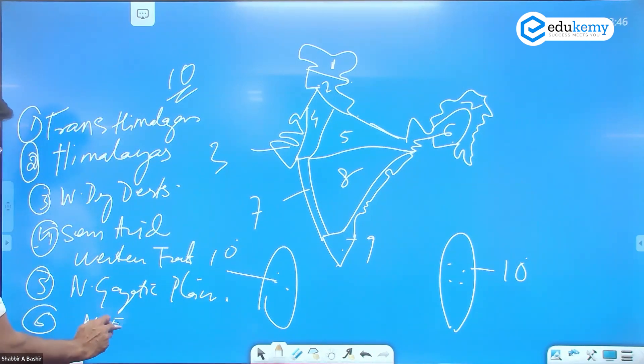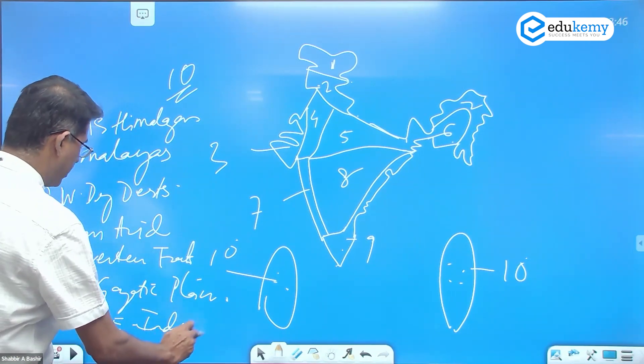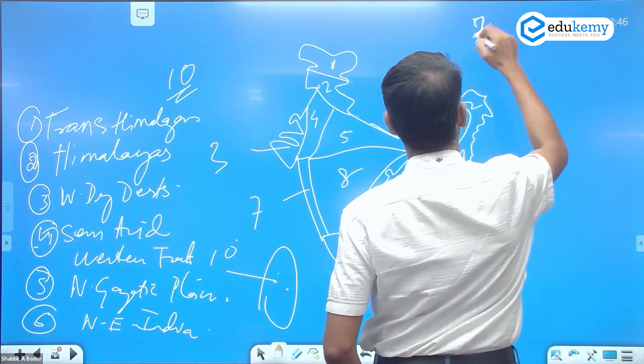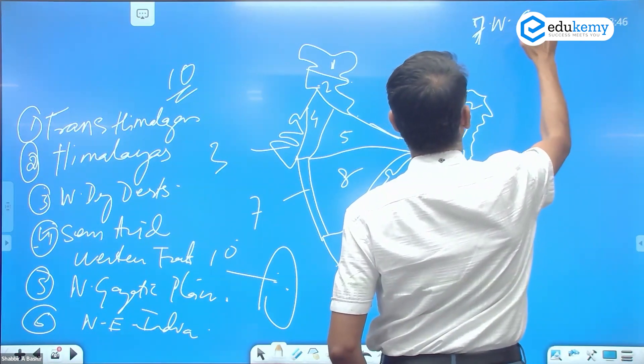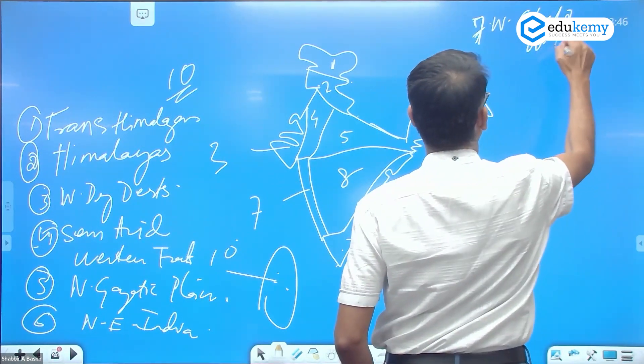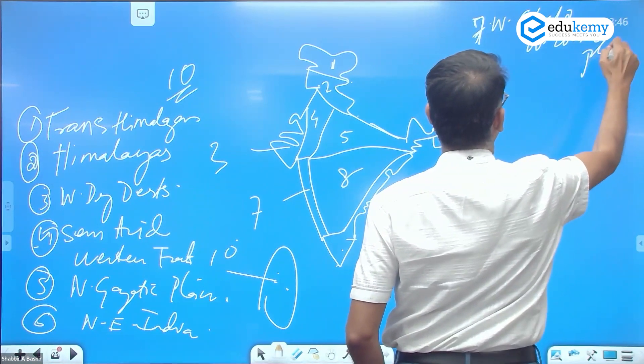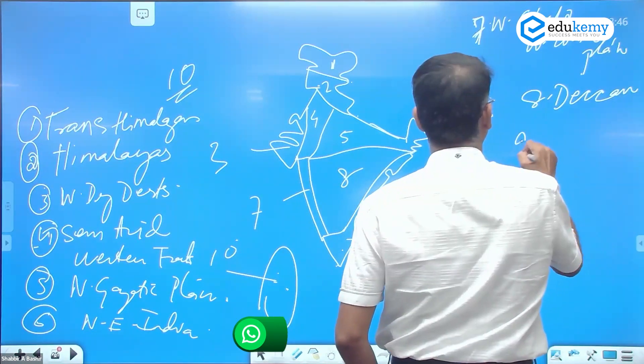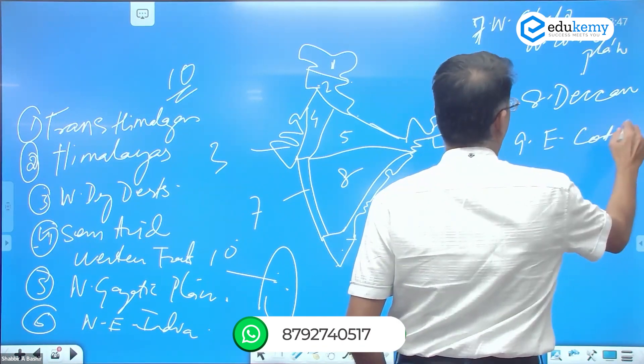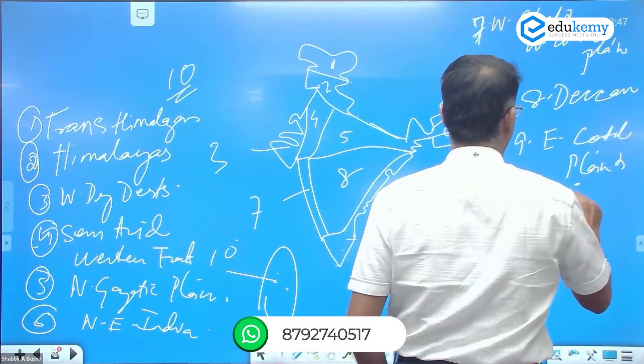Six is northeastern India, seven is western ghats and west coastal plains, eight is the Dekkan region, nine is east coastal plains and ghats.